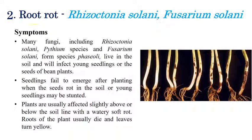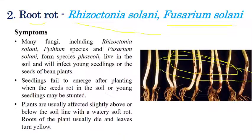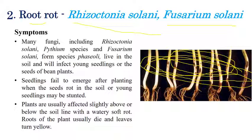The second disease is root rot, caused by Rhizoctonia solani and Fusarium solani. Other soil-borne pathogens can also be involved. If you see the symptoms: initially, water-softening or watery discolorations can be seen on above-soil parts.